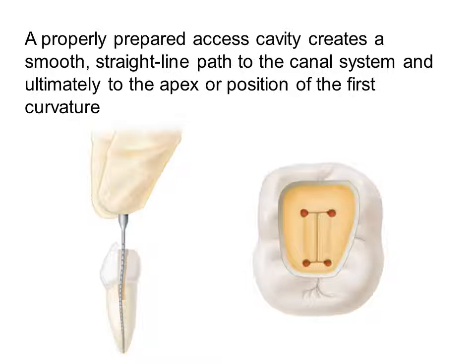Any bending will break the instruments. Removal of the pulp horn is very important. As we see here, the diverged cavity allows a direct access to the canal orifices. The map and the floor of the pulp is very important to preserve. These lines between the pulp orifices are very important because they will lead us to the orifices of each canal.